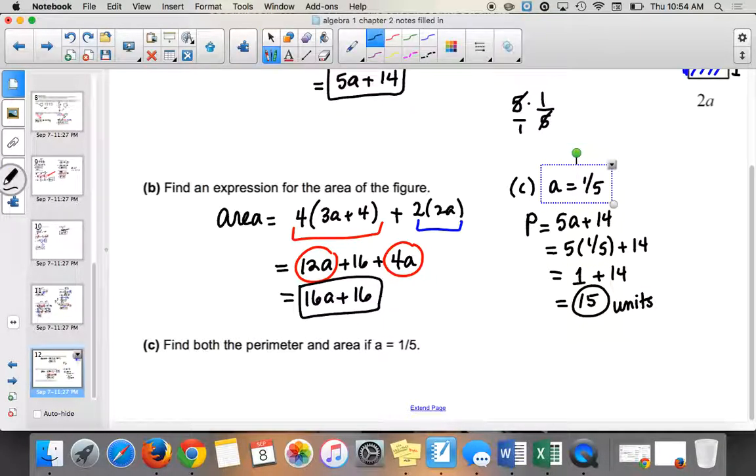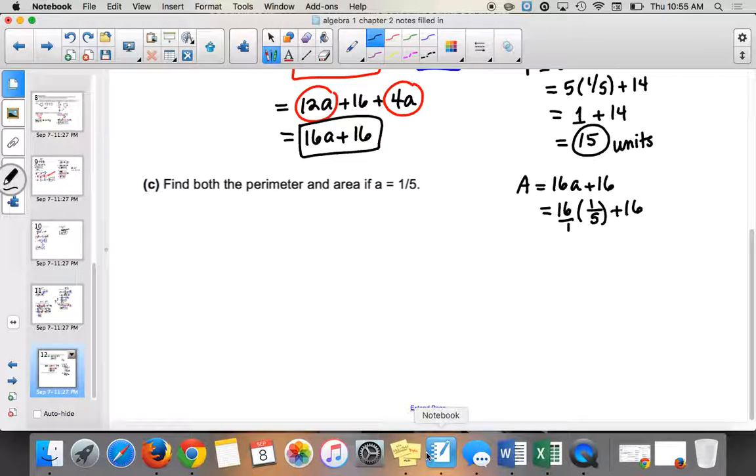So if I'm finding the area, your area is 16a plus 16. So if I plug in 16 times 1 fifth, right? That's what A is, plus 16. It's a little gross. We can handle it. So I'm going to think of it as 16 over 1 times 1 fifth. So that's going to give you 16 over 5 plus 16.